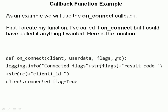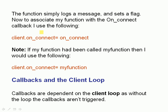We're going to do an example with the on_connect callback. First, you create the function. It's a very simple function — all I'm doing is logging a message and then setting a flag, client_connected_flag, to true. Then I associate the function with the on_connect callback using the statement: client.on_connect = on_connect. The name of the function can be anything you want. If I had called it my_function, then the assignment would be client.on_connect = my_function.